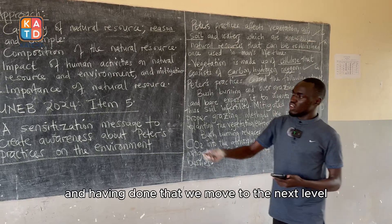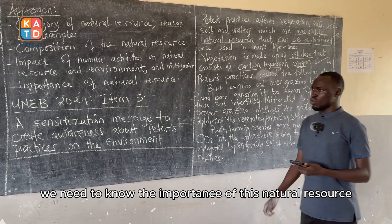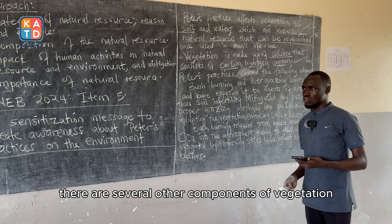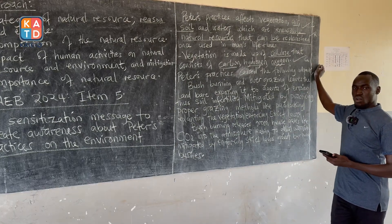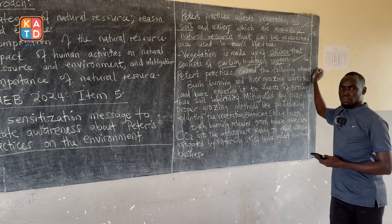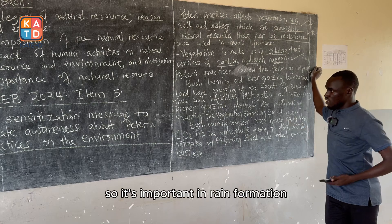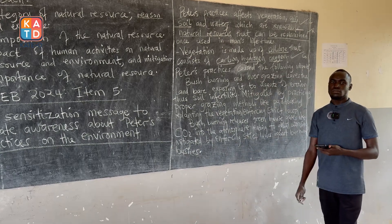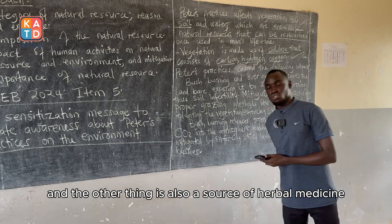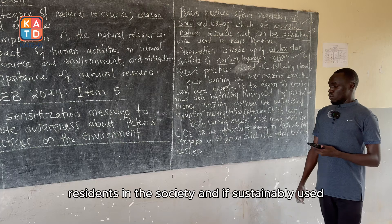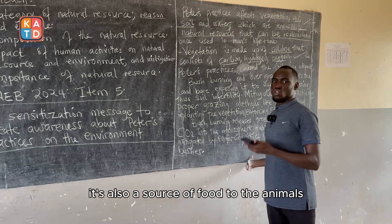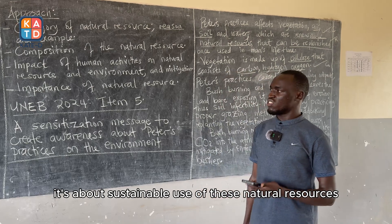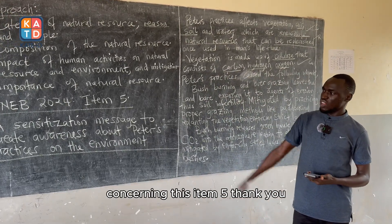Having covered impacts and mitigations, move to the next level: the importance of this natural resource. Vegetation is not simply grass — there are several other components of vegetation. Vegetation participates in the formation of rain through evapotranspiration, so it is important in rain formation. It is also a source of food for human beings in the society, a source of herbal medicine for residents, and if sustainably used, it is also a source of food for animals. That is all concerning Item 5.